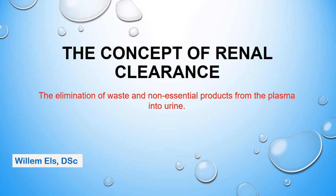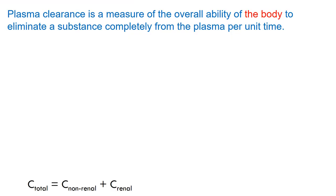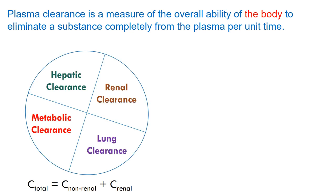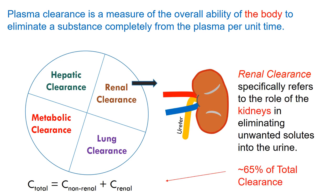Other organs are also capable of clearing the plasma. The general definition of plasma clearance is that it is a measure of the overall ability of the body to eliminate a substance completely from the plasma per unit of time. Some of these organs include the liver, the lung, salivary glands, and of course the kidney. The role of the kidneys is of special importance because it is the major process by which the kidney eliminates substances from the blood, totalling approximately 65 percent of total clearance.